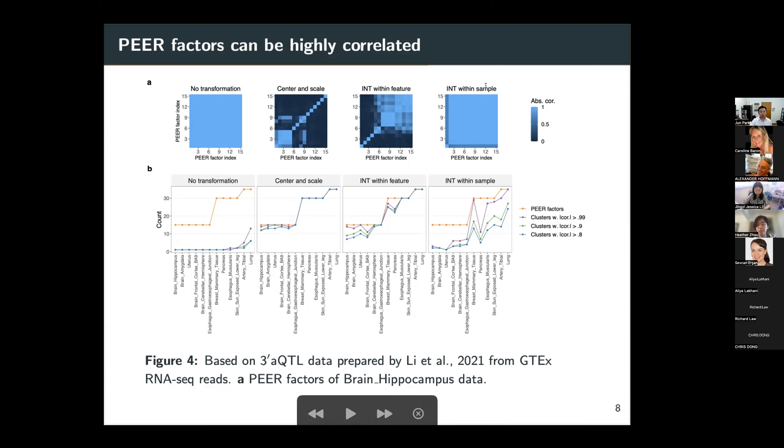And when we apply inverse normal transform within each sample, this is still a very serious issue. And inverse normal transform within feature and within sample are popular pre-transformation methods used in the field. I think in contrast, center and scale, a simpler method is less popular. So I guess the moral of this story is that it's not guaranteed that PEER factors will capture the various components of your data if not used very carefully and checking the data is essential. And I think I'm going to skip talking about the bottom panel, but the bottom panel tries to summarize these correlation heat maps into one point so that we can look across different tissue types more easily.